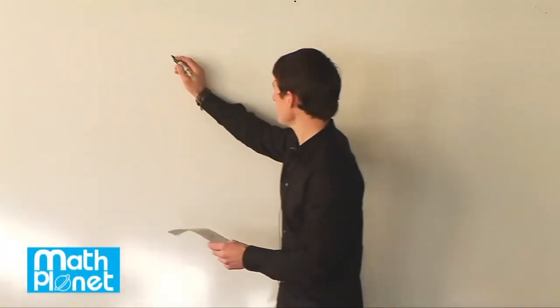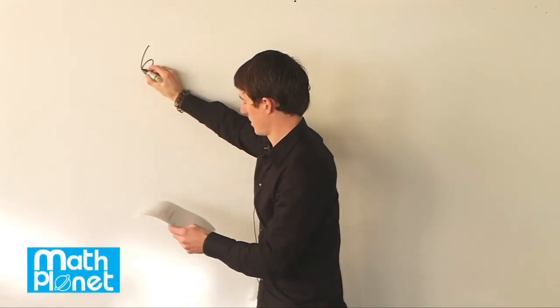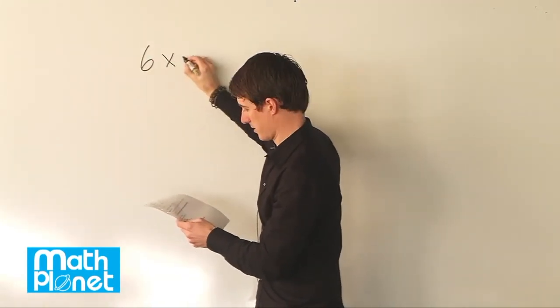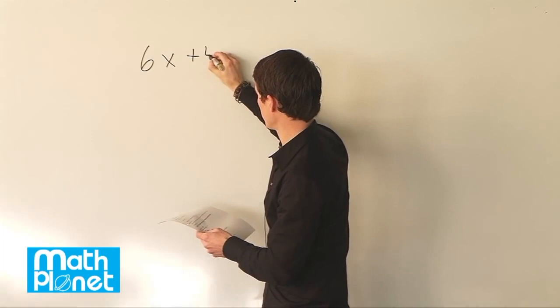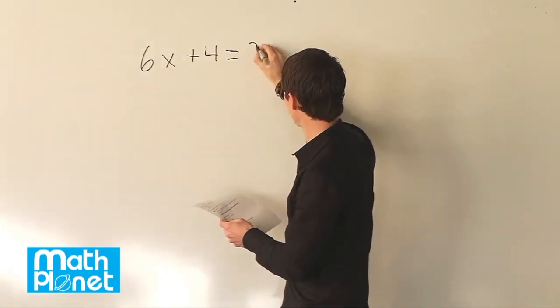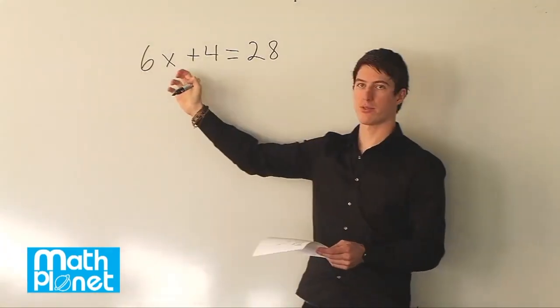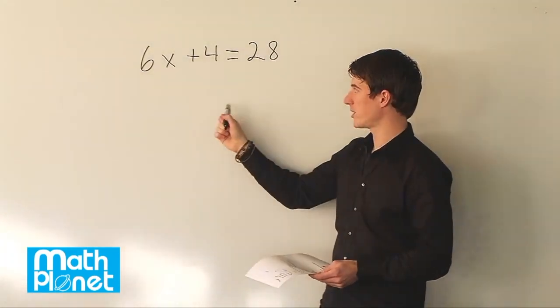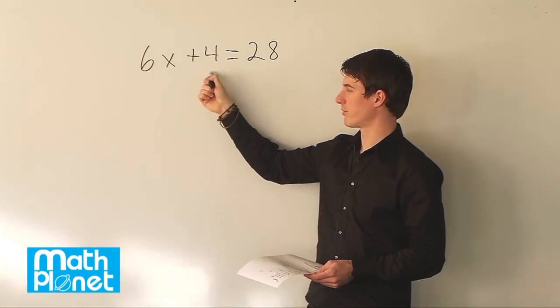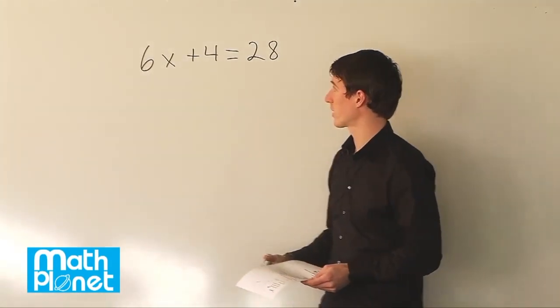Here we have an algebraic equation that we want to solve. The equation is 6 times x plus 4 equals 28. To solve this problem we want to solve so we have x equals something. To do that we need to use inverse operations to get rid of these two terms, the 4 and the 6.